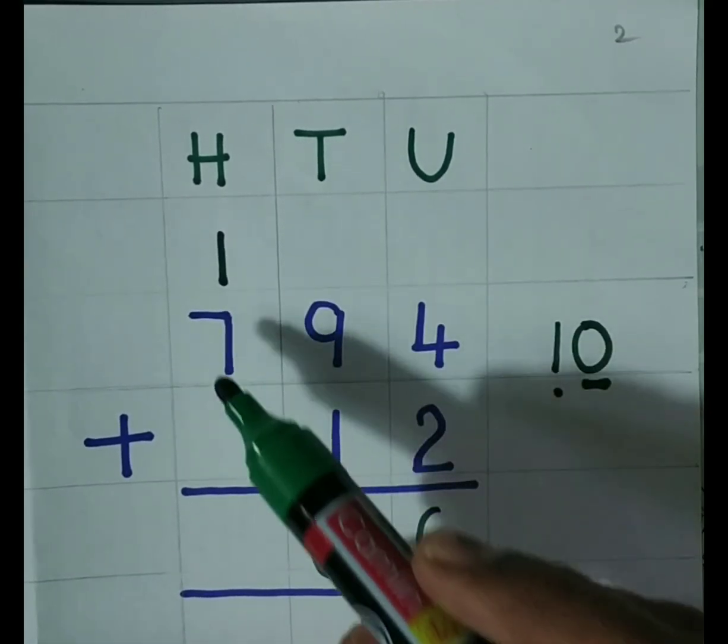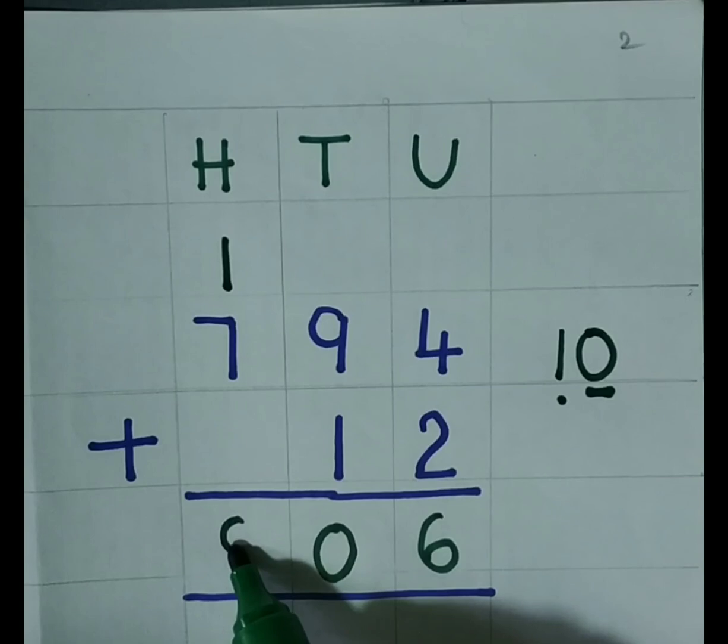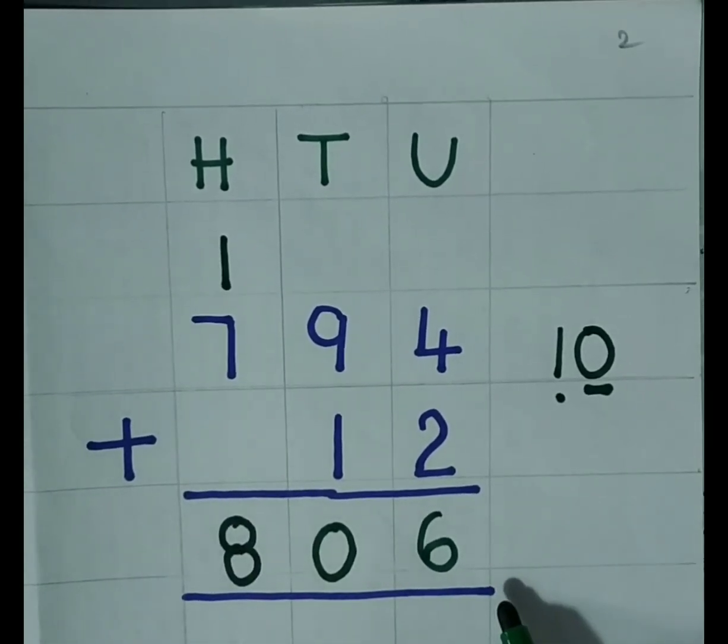Then, 1 plus 7 is 8. So, the answer is 806.